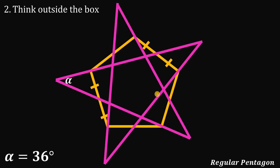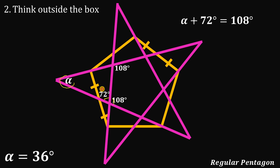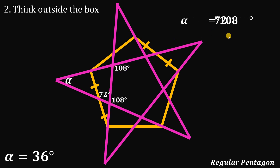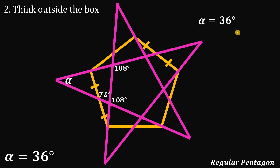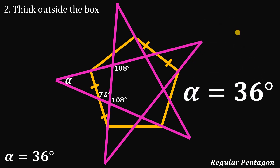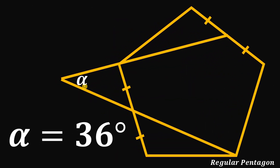The inner pentagon formed inside the star is technically a regular pentagon, so the measure of each of its angles is also 108°. Since this forms a linear pair, the adjacent angle is 72°. Using the exterior angle theorem: alpha + 72° = 108°. Subtracting 72° from both sides: alpha = 36°. Therefore, the measure of angle alpha is 36°, and we are done.